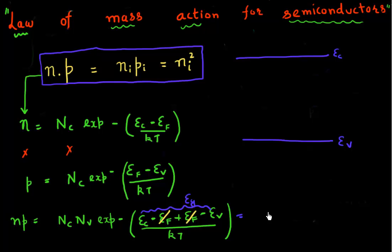And I can see that my n into p is just equal to Nc times Nv multiplied by exponential of minus Eg by kT.